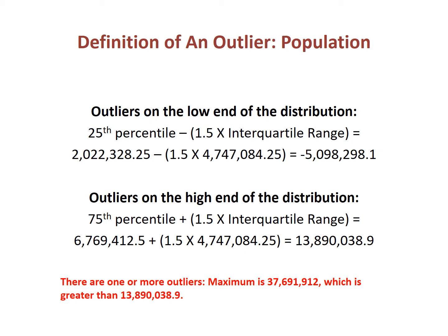Here are the calculations for outliers for the population variable worked out on each end of the distribution. On the low end, a point is an outlier if the population of the state is less than minus 5,098,298.1 — since no states have negative populations, we do not have to worry about outliers at the low end. On the high end, a state is an outlier if its population exceeds 13,890,038.9. The maximum value of the distribution exceeds this threshold, so we conclude that there is one or more outliers in the distribution.